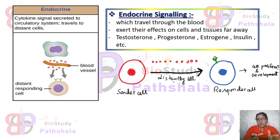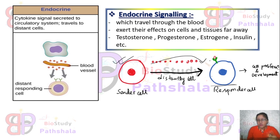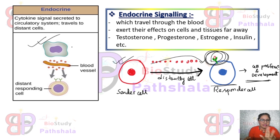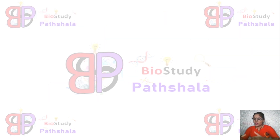Endocrine signaling is mainly observed in the case of hormones, where the source of the hormone is distantly situated from its target area. The sender cell produces the signal, which is transported to the responder via blood vessels. After perceiving the signal, the responder cell shows cell proliferation or developmental programs. This diagram clearly illustrates endocrine signaling — the signals are transported via blood vessels and received by the responder cells.